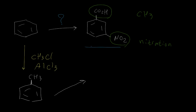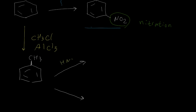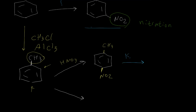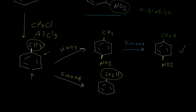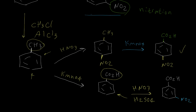From toluene, there are two different ways. If I perform nitration first, the methyl group is ortho and para directed, giving us para-nitrotoluene. If I then oxidize this compound with potassium permanganate, I can convert CH3 to a carboxylic acid group, yielding the para-product. Alternatively, by performing oxidation first, toluene converts to benzoic acid. This CO2H carboxylic acid group is a meta director, so we can then perform nitration and the nitro group will attach to the meta position, successfully synthesizing meta-nitrobenzoic acid.